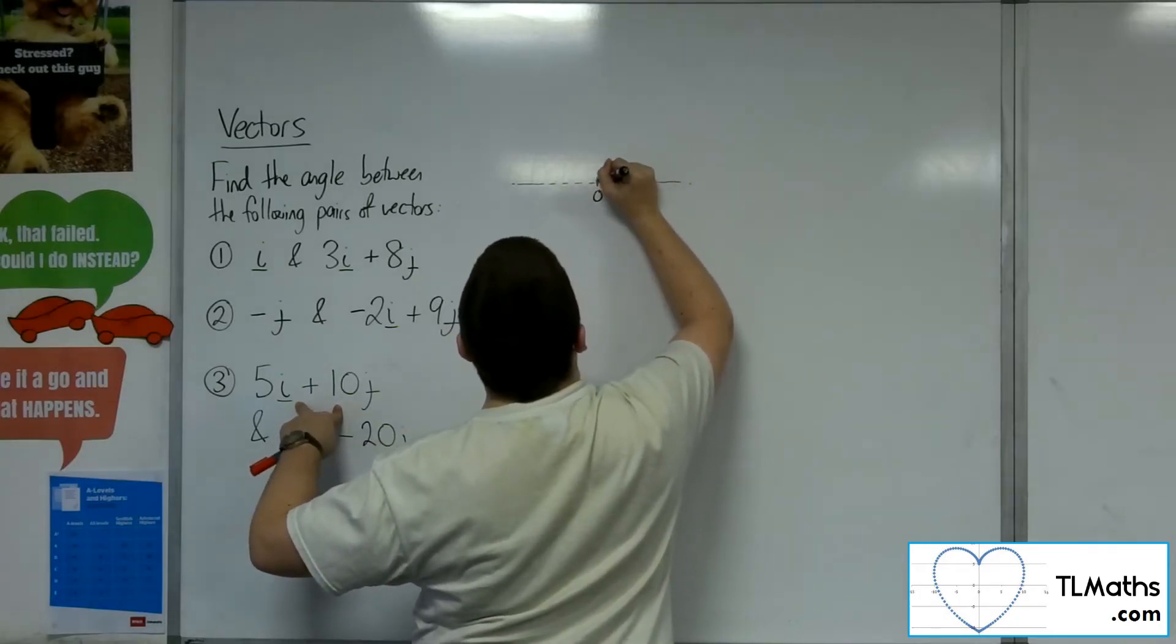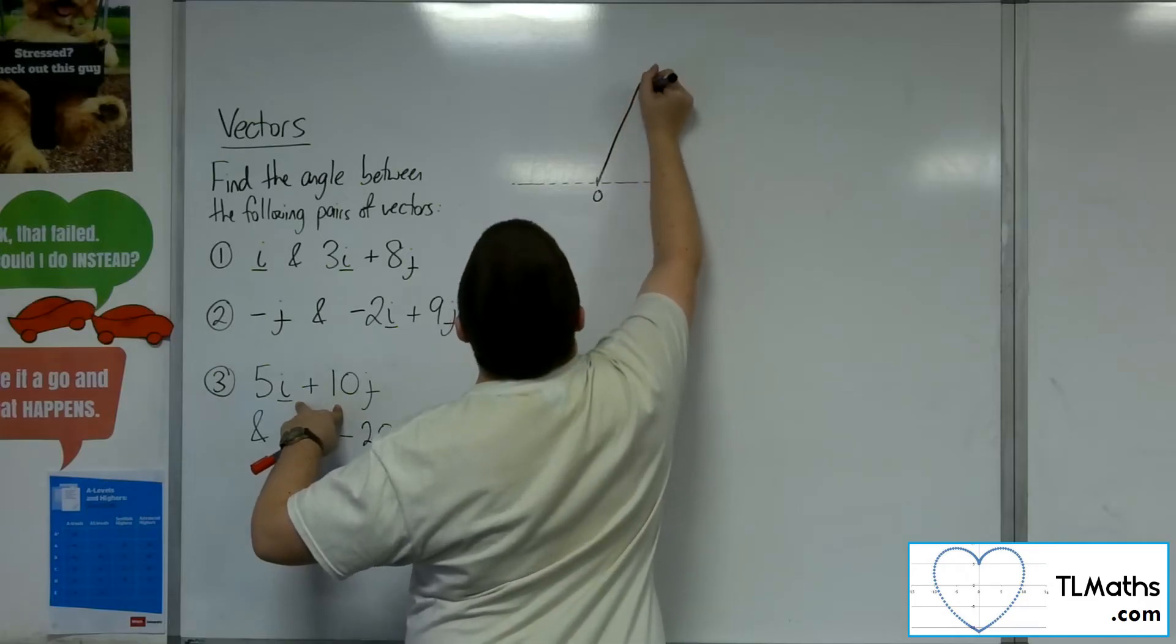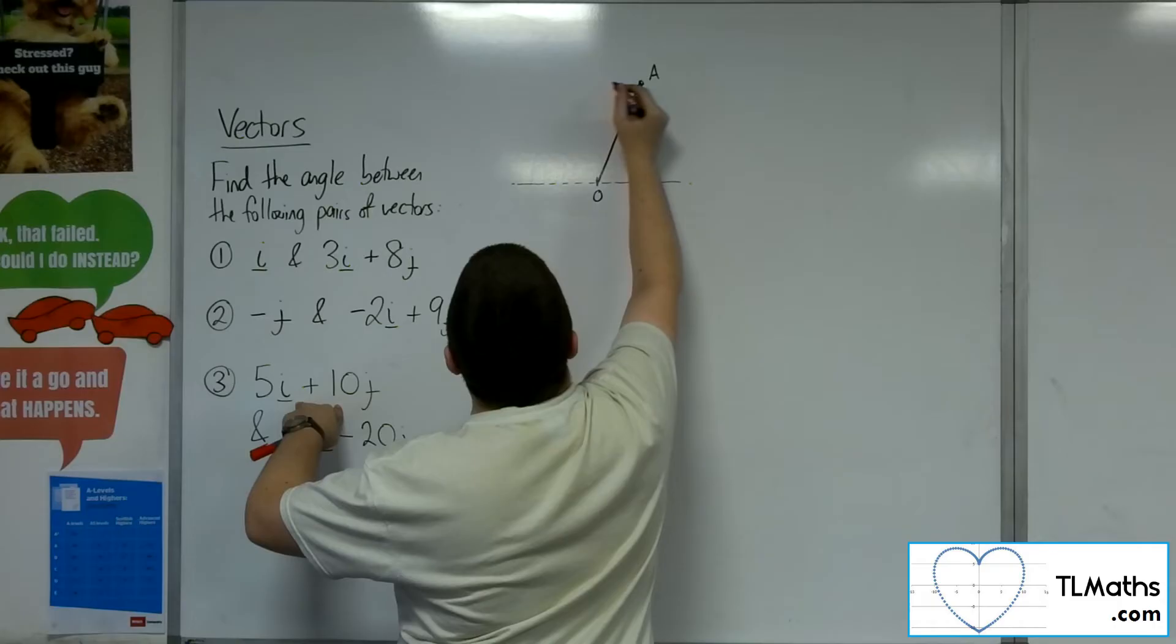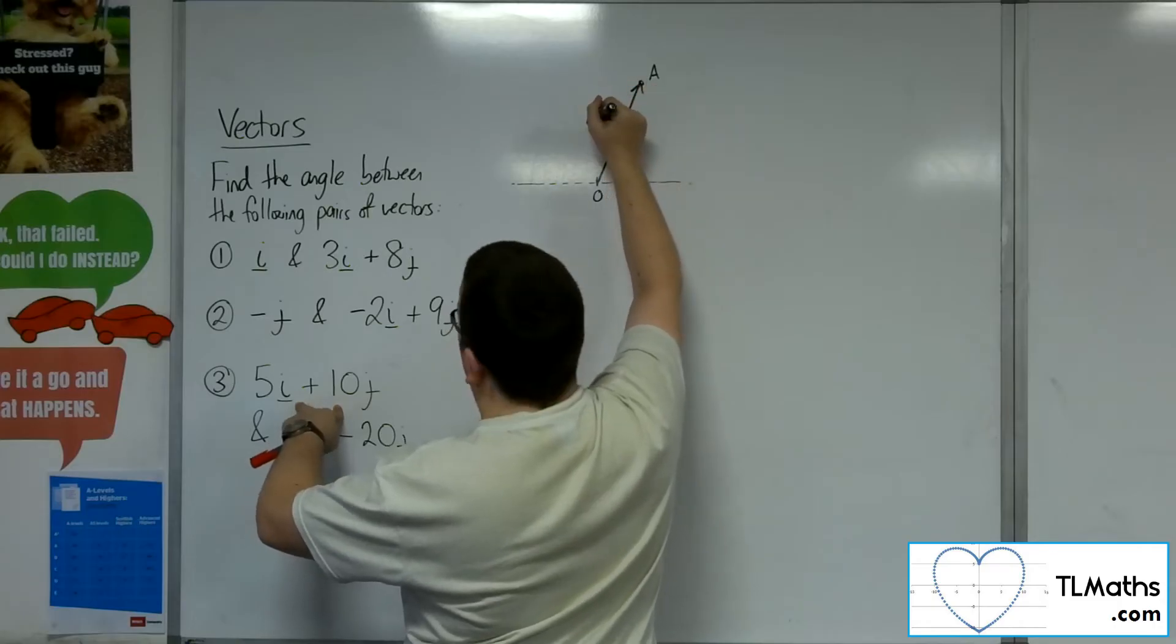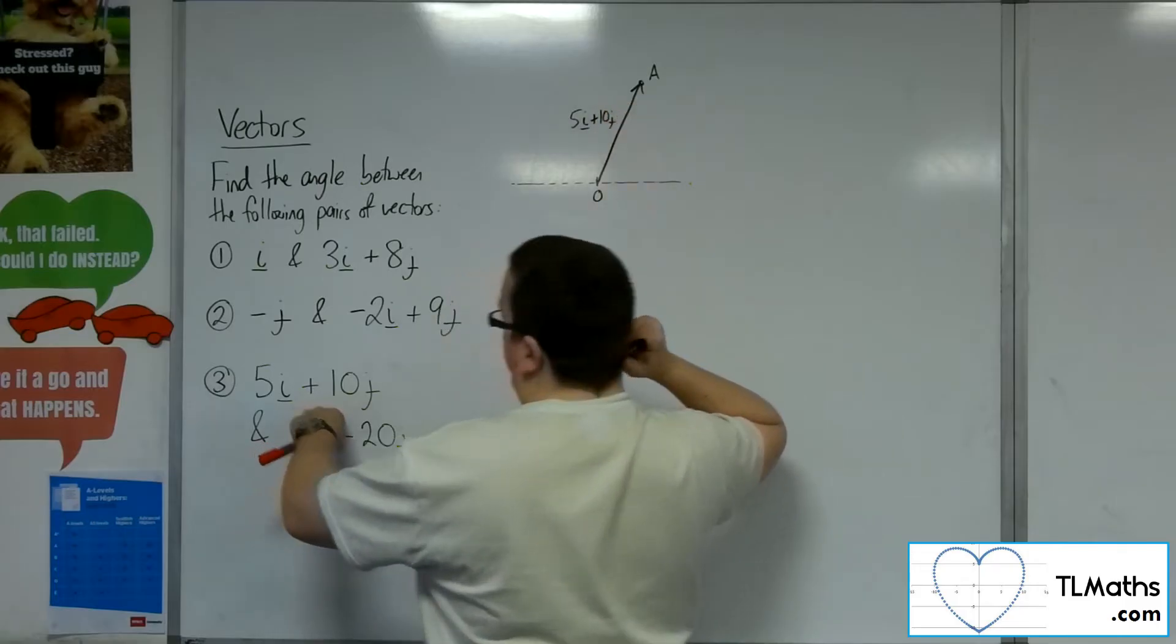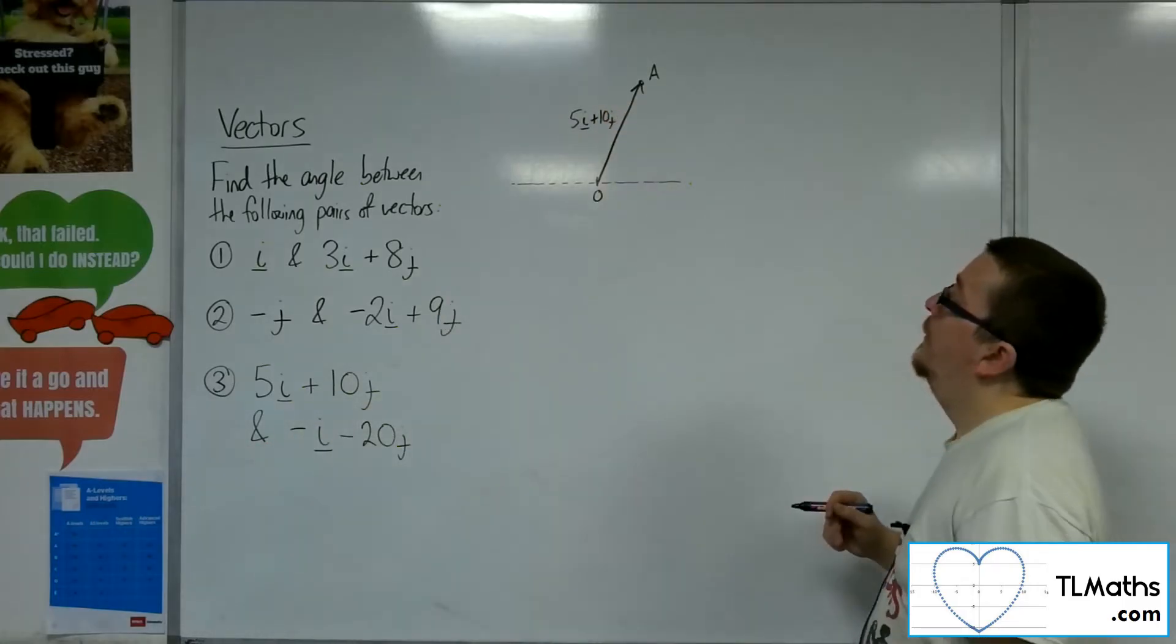So 5 along 10 up. It looks something like that. So let's say that's point A. So let's put that in. So 5i plus 10j.